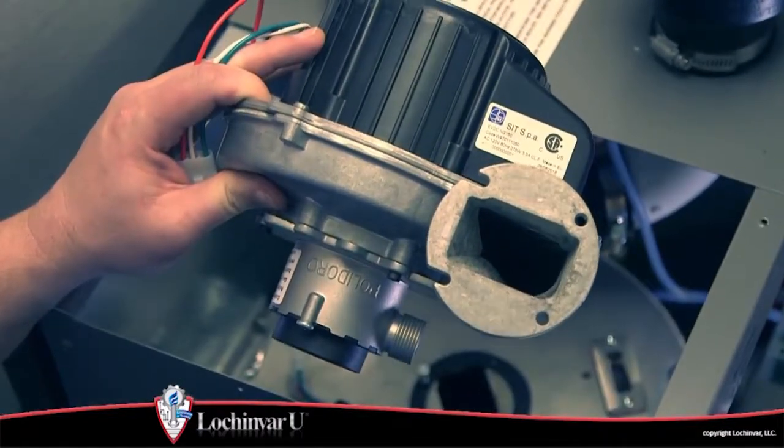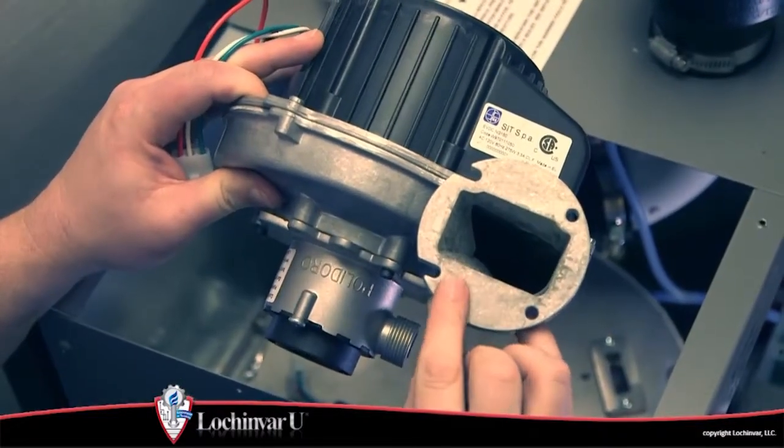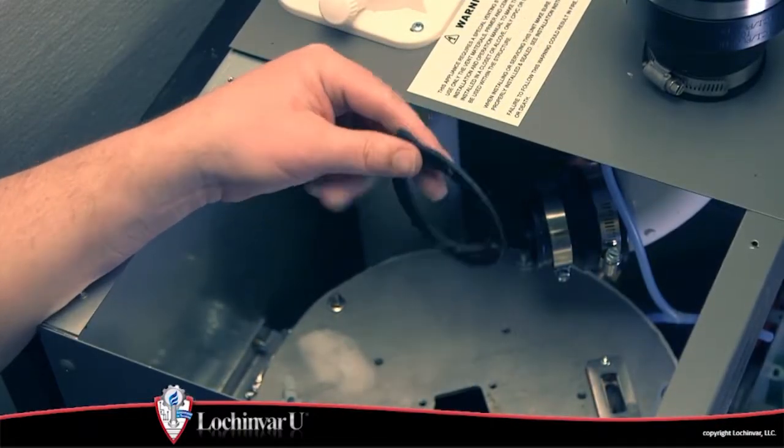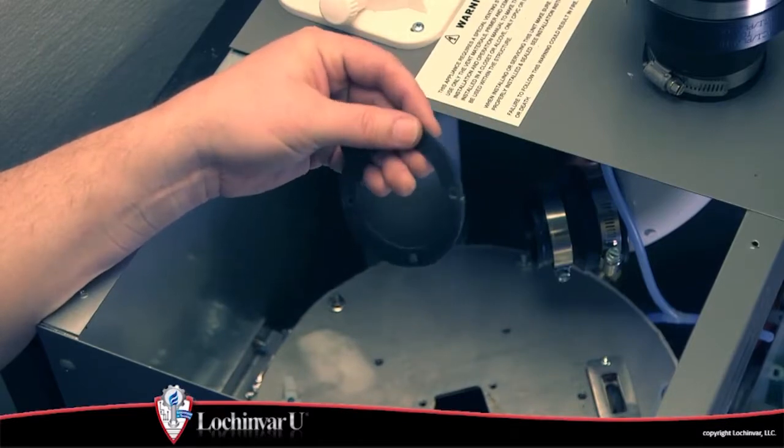A gasket is used to seal between the fan assembly and the heat exchanger top plate. Care must be taken not to tear or damage the gasket. If a gasket is damaged or torn, it must be replaced.